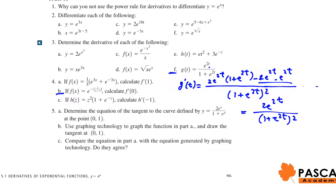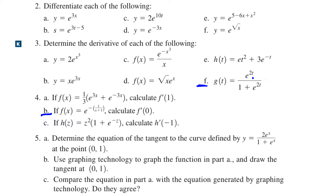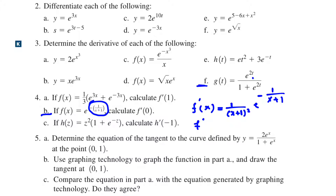Question 4, part b: determine the slope of the tangent line, f'(0), to the graph of y equals e to the power of negative 1 over (x+1), when x is 0. We know the derivative of e^(g(x)) is g'(x) times e^(g(x)). Therefore, the derivative is the derivative of negative 1 over (x+1), which by the quotient rule is 1 over (x+1)^2, times e^(-1/(x+1)). Therefore, f'(0) equals e^(-1).